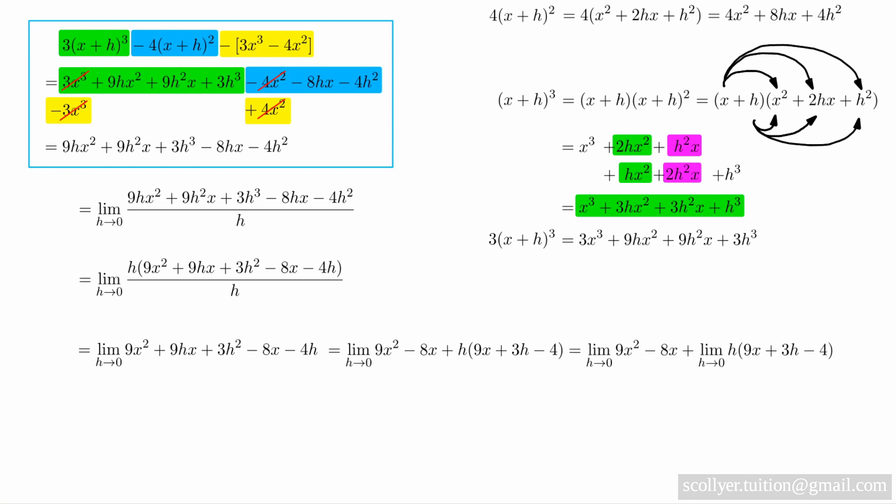We split the limit of a sum into the sum of limits, and we note that the terms in the first limit have no dependence on h and so are unchanged by the limiting process. The terms in the second limit all have a common factor of h, and so the limit as a whole tends to 0 as h tends to 0.